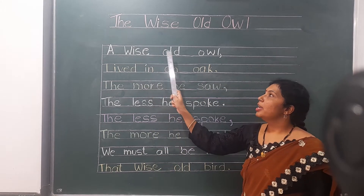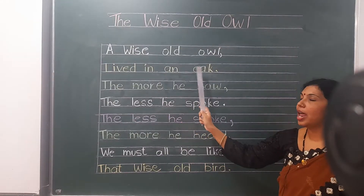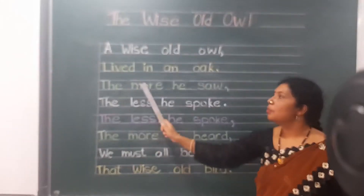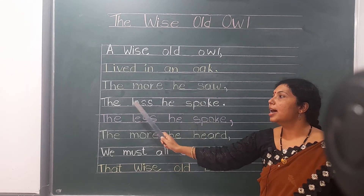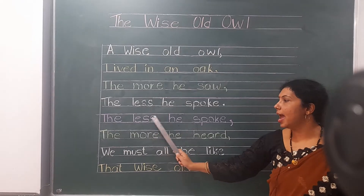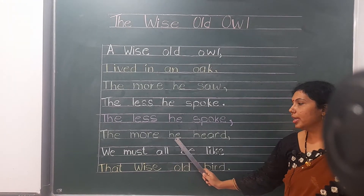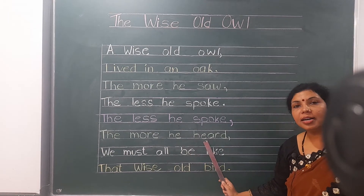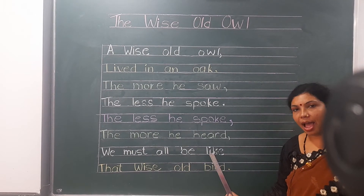Now all of you, we will recite this poem together. A wise old owl lived in an oak. The more he saw, the less he spoke. The less he spoke, the more he heard. We must all be like that wise old bird.